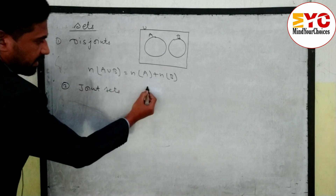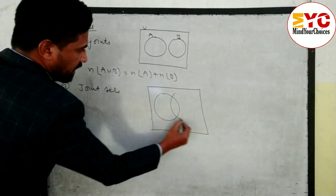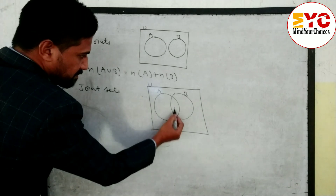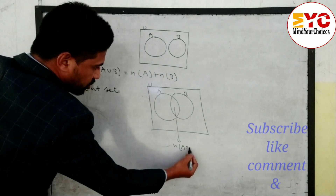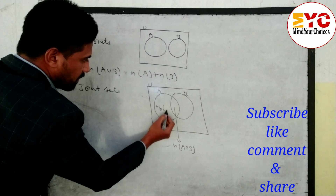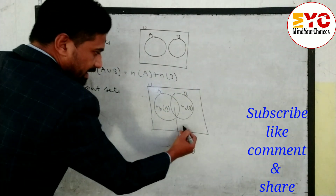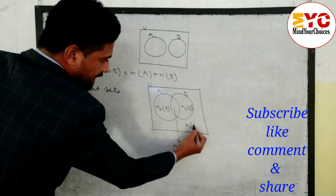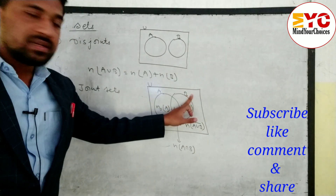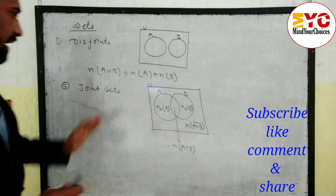Now look at joint sets and the diagram. Joint set means some elements are common between sets A and B. The middle part is known as n(A∩B) — intersection means common. The left part is known as 'only A' and the right part as 'only B.' The outside region is known as (A∪B) complement — for example, suppose A likes tea and B likes coffee; (A∪B) complement means people who like neither tea nor coffee.